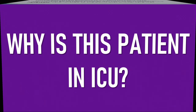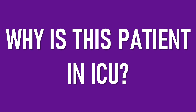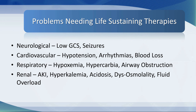The second question is: why is this patient in ICU right now? Most patients are admitted to ICU because they need life-sustaining therapies, and there are a limited number of these therapies available. They may have come into the ICU because of a neurological problem — usually a low Glasgow Coma Score, which may be caused by metabolic problems or seizures. It may be a cardiovascular problem: either hypotension, arrhythmias, or blood loss. A respiratory problem: hypoxemia, hypercarbia, or airway obstruction. Or it may be a problem of the renal and electrolyte system: acute kidney injury, hyperkalemia, acidosis, dysosmolality, or fluid overload.